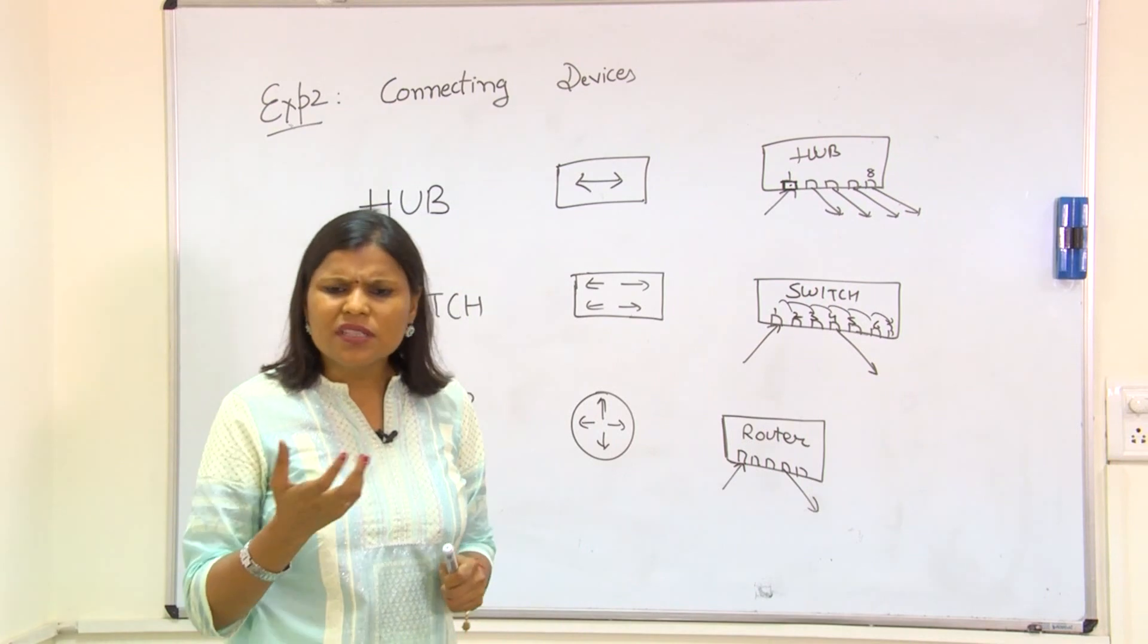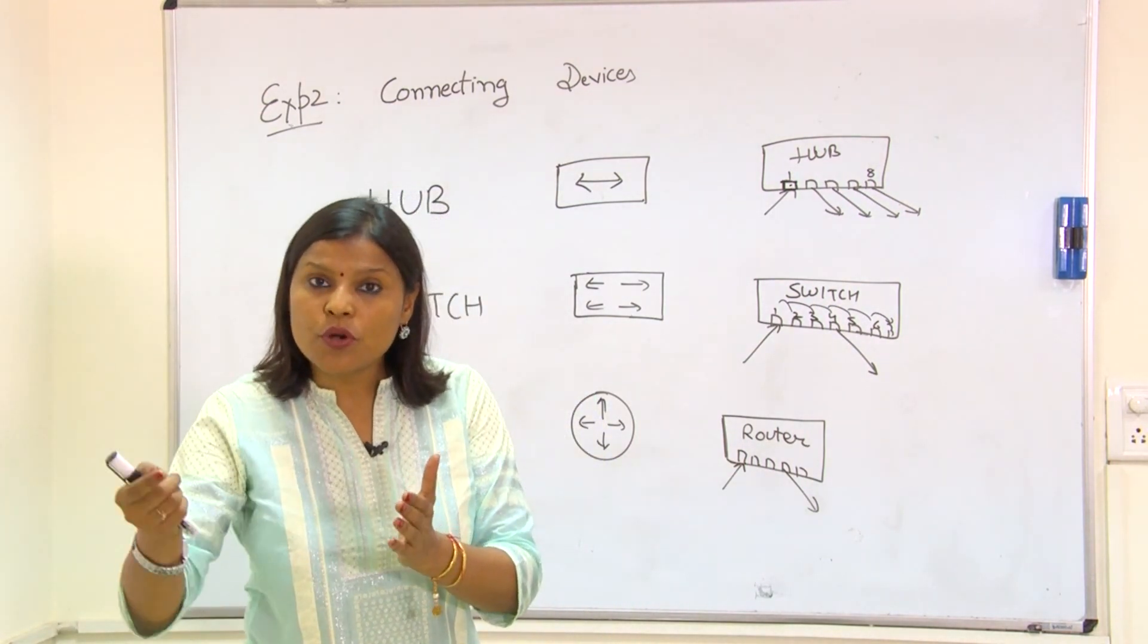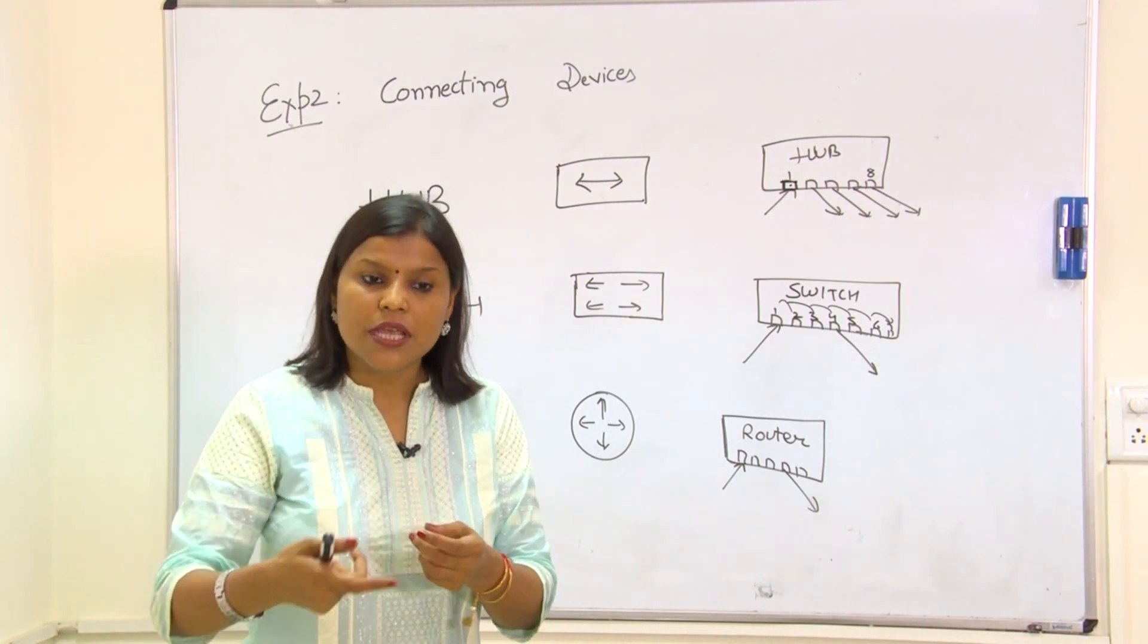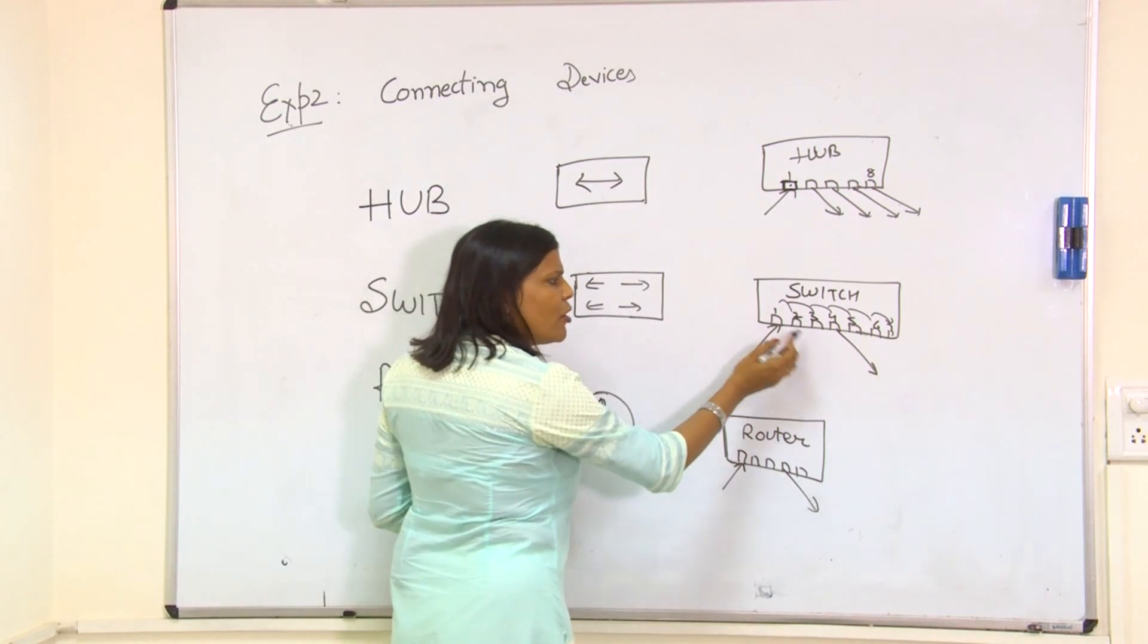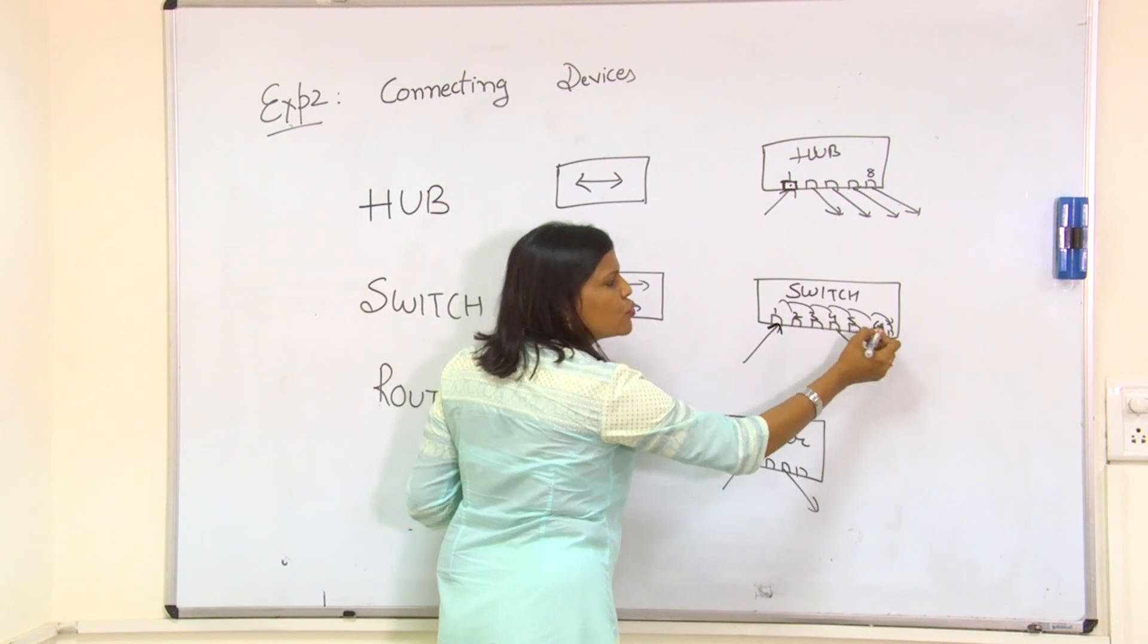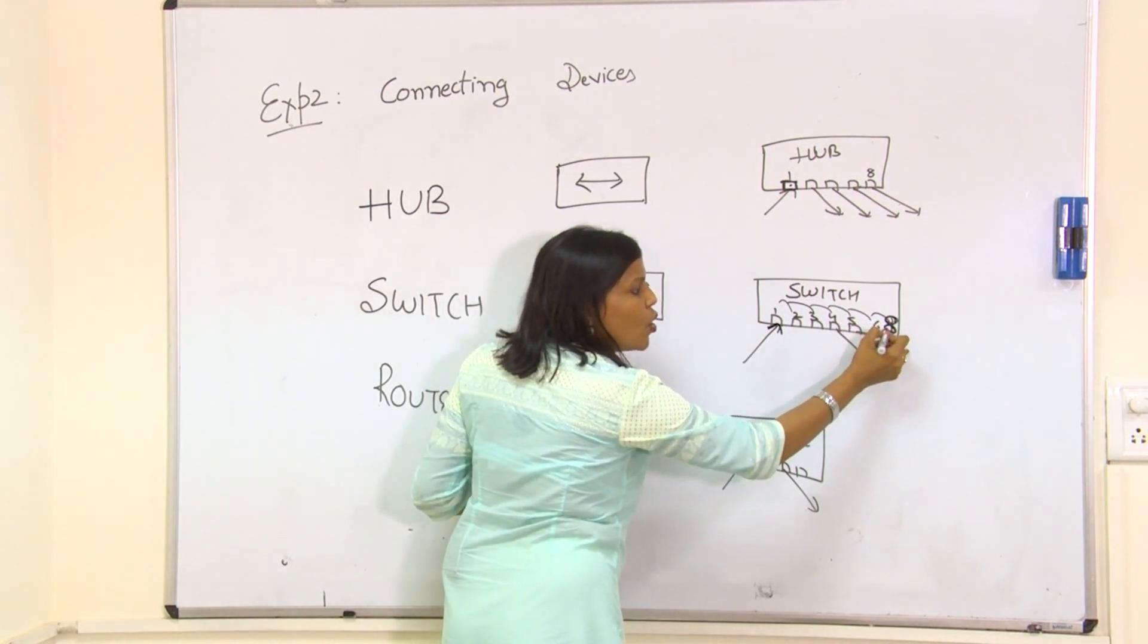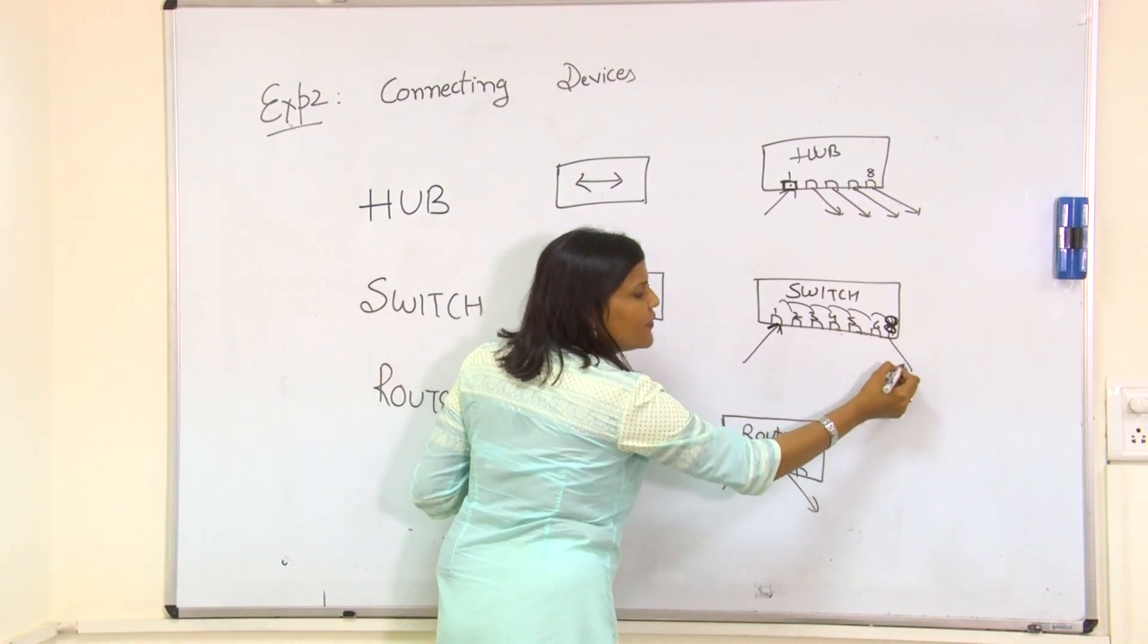What is this MAC table? It means the switch will remember which IP address is attached to which port. First time it will broadcast to all ports, but next time when port 1 wants to connect with port number 8, only the message will be delivered to port number 8.